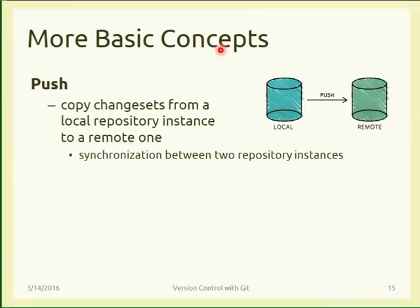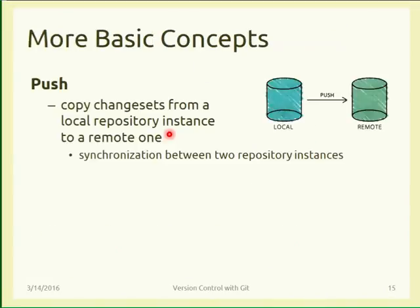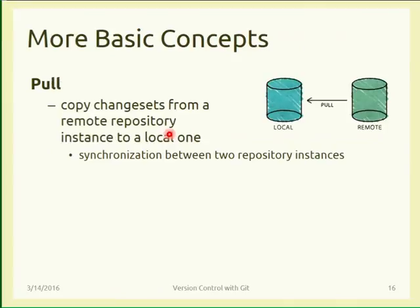In distributed version control systems, we need a way to synchronize repositories. The operation that synchronizes my local repository with a remote repository on an online service is called push. You have a working copy, you commit to your local repository, and then you push to a remote repository. The opposite operation is called pull: from a remote repository you pull things to your local repository, and then update your working copy.